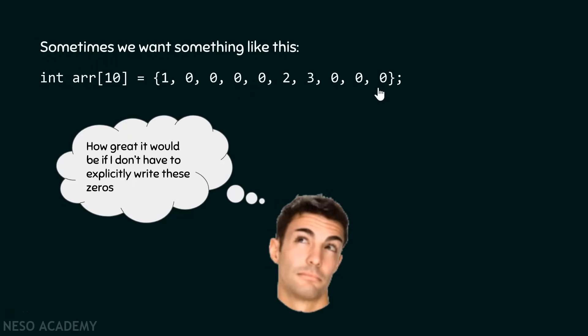Like we have already seen in the previous lecture, whenever we have elements lesser than the length of the array, then the rest of the positions will automatically get filled by zeros. But as you can see, these non-zero elements are not in a sequence.